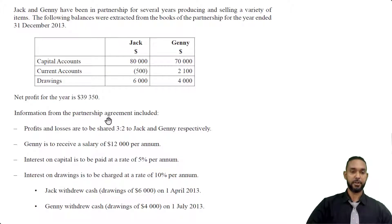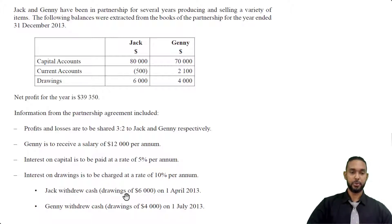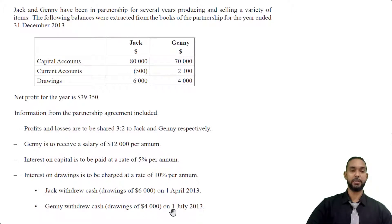Information from the partnership agreement included the following: profits and losses are to be shared 3 to 2 to Jack and Jenny respectively. Jenny is to receive a salary of 12,000 per annum. Interest on capital is to be paid at a rate of 5% per annum. Interest on drawings is to be charged at a rate of 10% per annum. Jack withdrew cash drawings of 6,000 on the 1st of April 2013, and Jenny withdrew cash drawings of 4,000 on the 1st of July 2013.